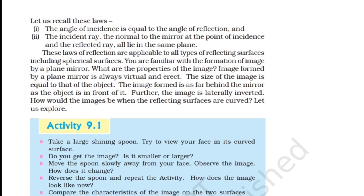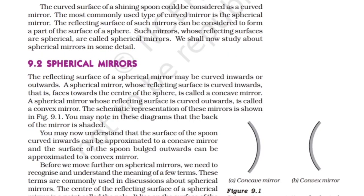Activity 9.1: Take a large shining spoon. Try to view your face in its curved surface. Do you get the image? Is it smaller or larger? Move the spoon slowly away from your face and observe how the image changes. Reverse the spoon and repeat the activity. How does the image look now? Compare the characteristics of the image on the two surfaces. The curved surface of a shining spoon could be considered as a curved mirror. The most commonly used type of curved mirror is the spherical mirror, whose reflecting surface forms a part of the surface of a sphere. Such mirrors are called spherical mirrors.